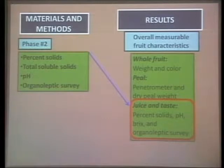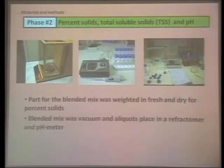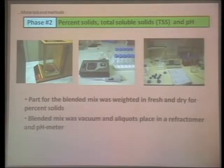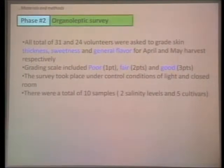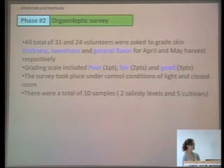In phase two, we characterized the juice and taste. First, we measured percent solids by blending all tomatoes, weighing fresh and dry. We filtered the blended material, collected it in a tube, and used a refractometer for total soluble solids and a pH meter. For the organoleptic survey, we gathered 31 volunteers for the first harvest and 24 for the second, asking them to grade tomatoes as poor, fair, or good for skin thickness, sweetness, and general flavor — 10 samples per volunteer across five cultivars and both salinity levels.